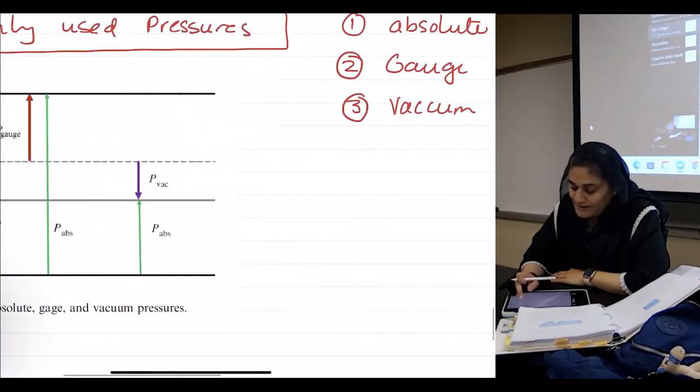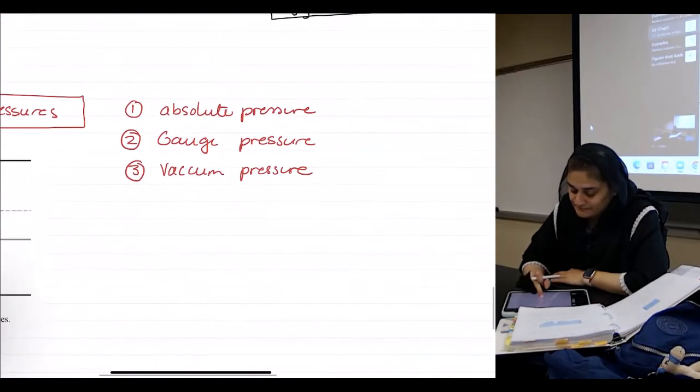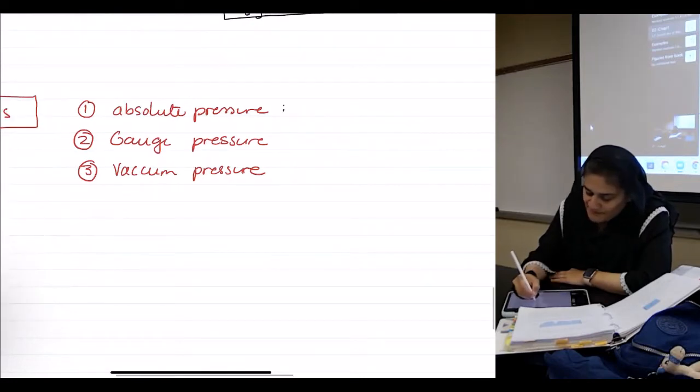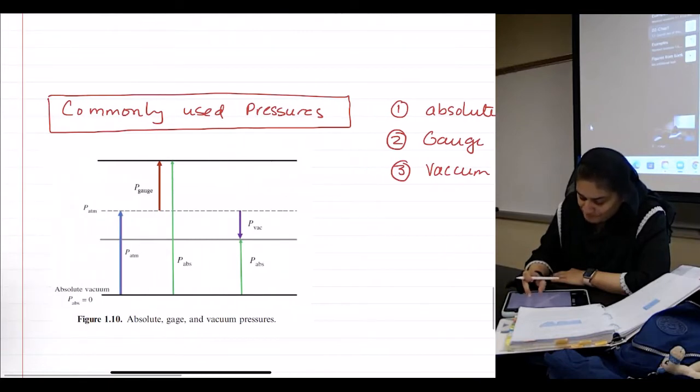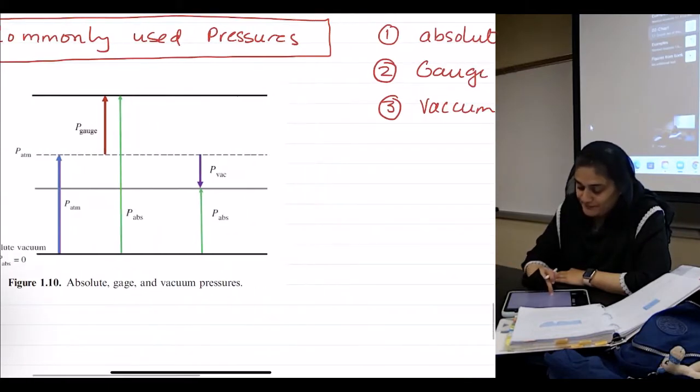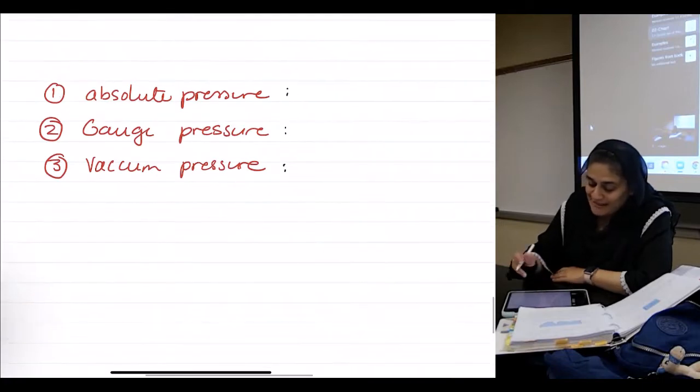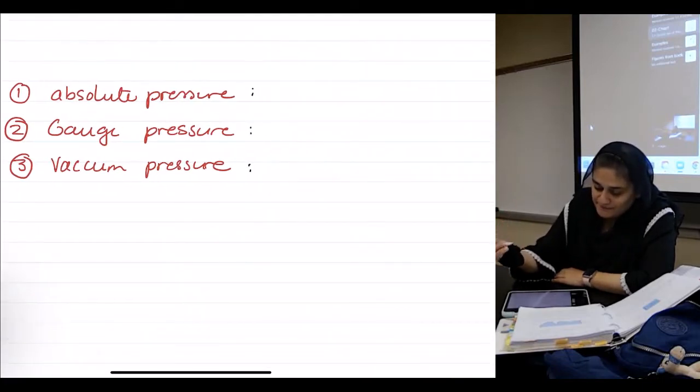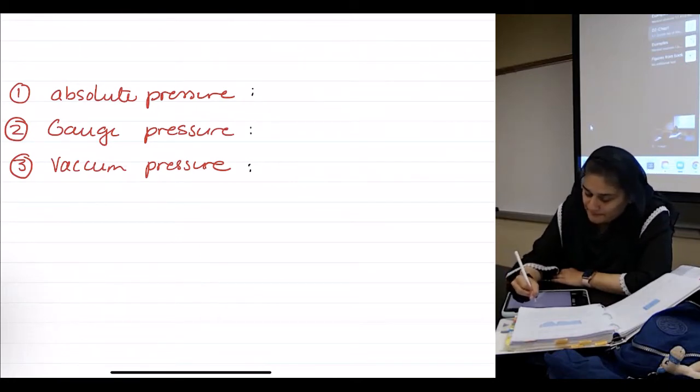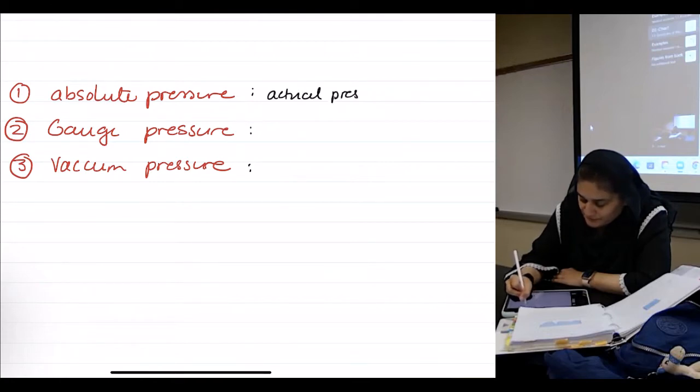Okay. What is absolute pressure? What is gauge pressure? What is vacuum pressure? So, the absolute pressure is the actual pressure at any given position.